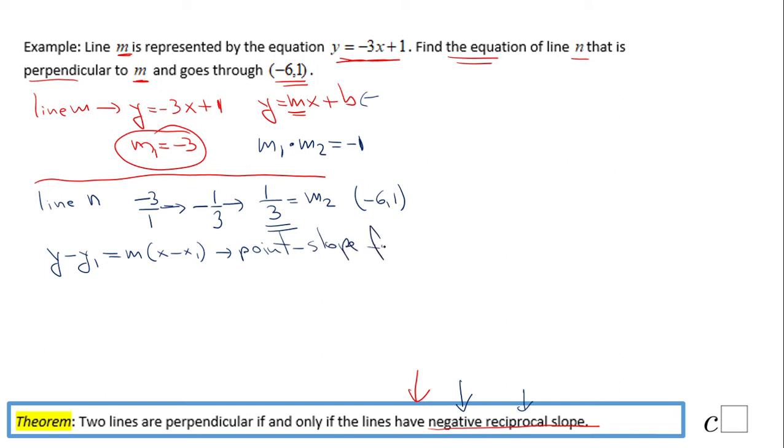This form tells us if you know a point and the slope, you can find the equation of that line. The point is (-6, 1), so x1 is -6 and y1 is 1. We have y minus 1 equals 1/3 times (x minus (-6)).